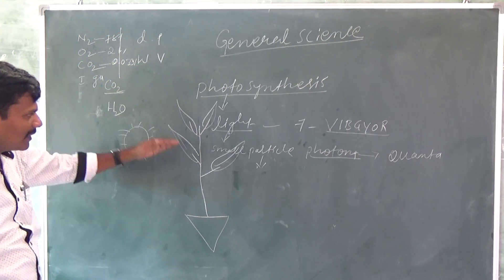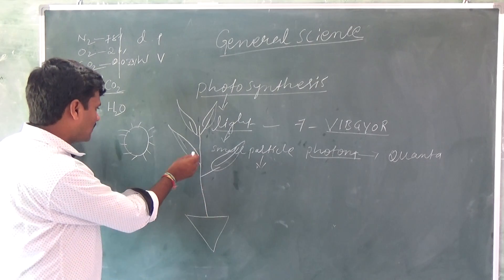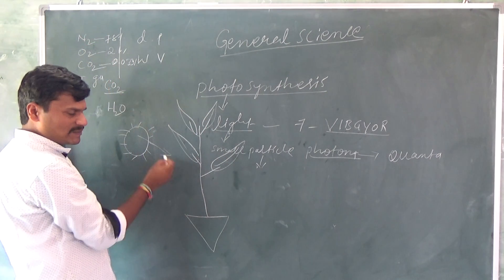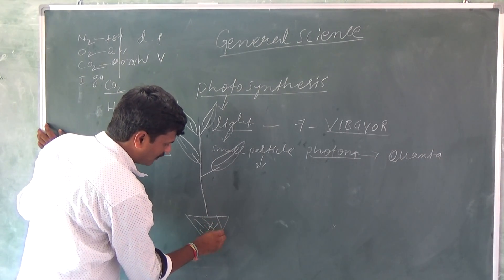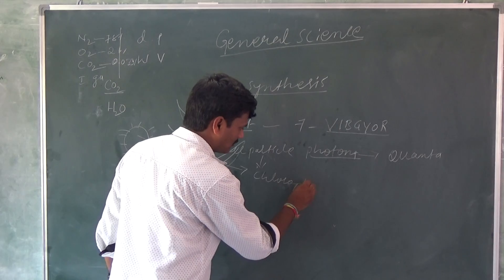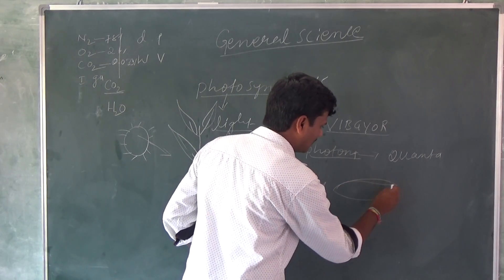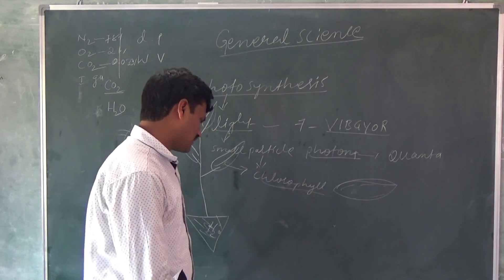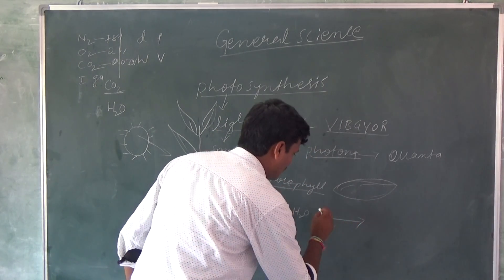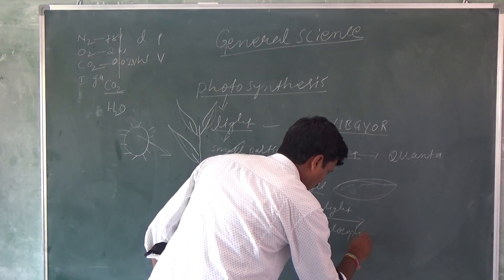Coming to the point: the plants are preparing their own food. The plants take light from the sun; carbon dioxide is present in the atmosphere, and water H2O is also there. In the leaf there is a pigment called chlorophyll. Chlorophyll is a type of pigment present in the leaf. Now let's discuss the equation: carbon dioxide plus water, in the presence of light and chlorophyll.